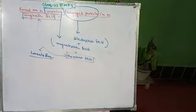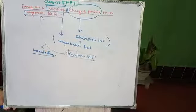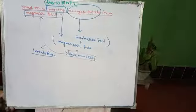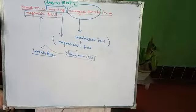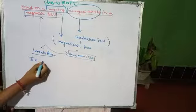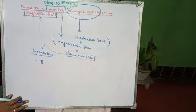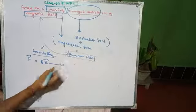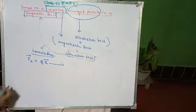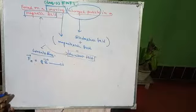We know that the electric force on a stationary charged object having charge Q in electric field E vector will be F equals to Q into E vector. This is equation number one — the electrostatic force due to the electric field is Q into E.